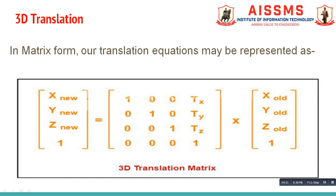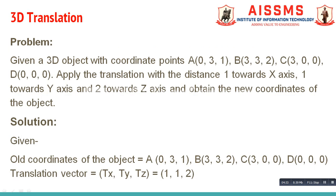Now let us see one problem based on 3D translation. Our problem statement is: given a 3D object with coordinate points A(0,3,1), B(3,3,2), C(3,0,0), D(0,0,0), apply translation with the distance 1 towards the X axis, 1 towards the Y axis, and 2 towards the Z axis, and obtain the new coordinates of the object.